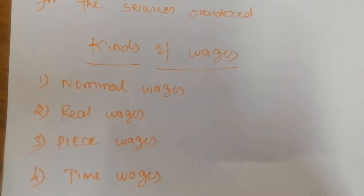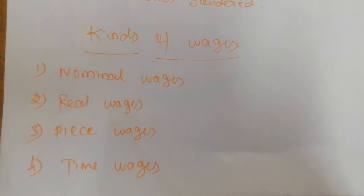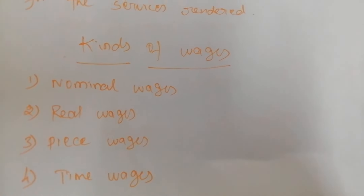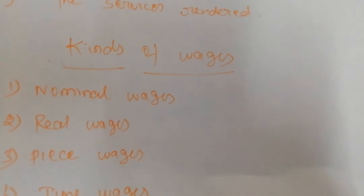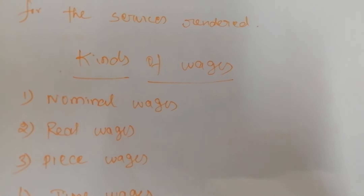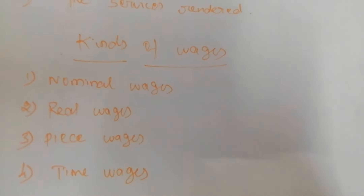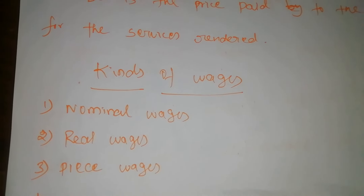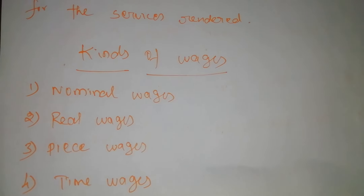There are four kinds of wages. The first is nominal wages or money wages, which refers to wages paid in terms of money only — when doing work for an owner or producer, we get remuneration in the form of money only, without any other incentives. Next is real wages, which are wages paid in terms of goods and services. Real wages represent the purchasing power of money wages.